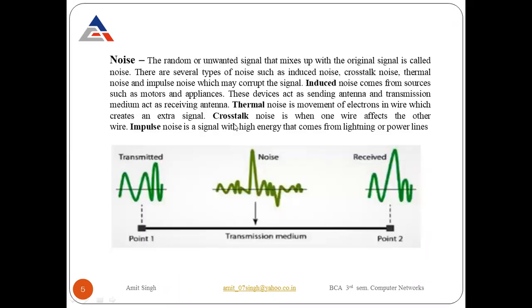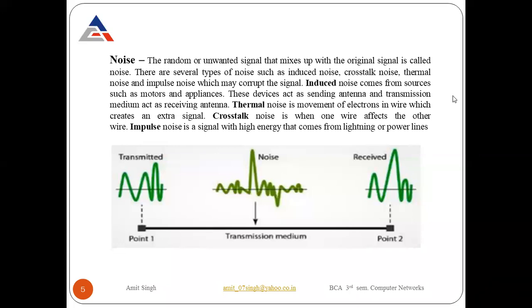The third problem is noise. The random or unwanted signals that mix up with the original signal are called noise. Whenever some outer signals are added to your signal, this is called noise. There are several types of noise such as induced noise, crosstalk noise, thermal noise, and impulse noise, which may corrupt the signals. We have four different categories: induced, thermal, crosstalk, and impulse. When these noises mix with our original signal, our signal automatically contains some type of noise.